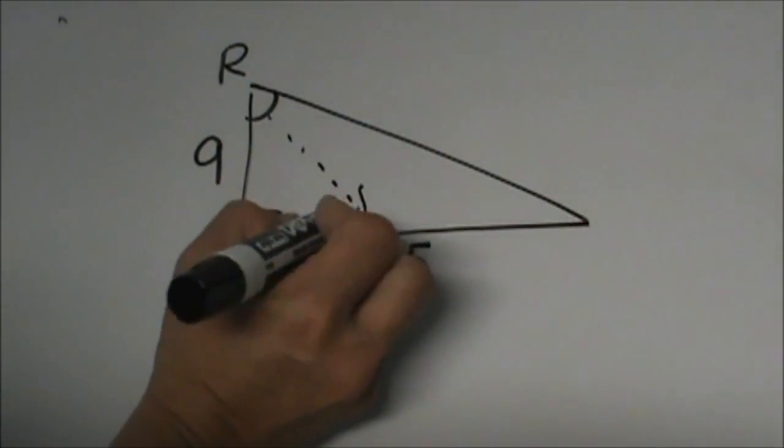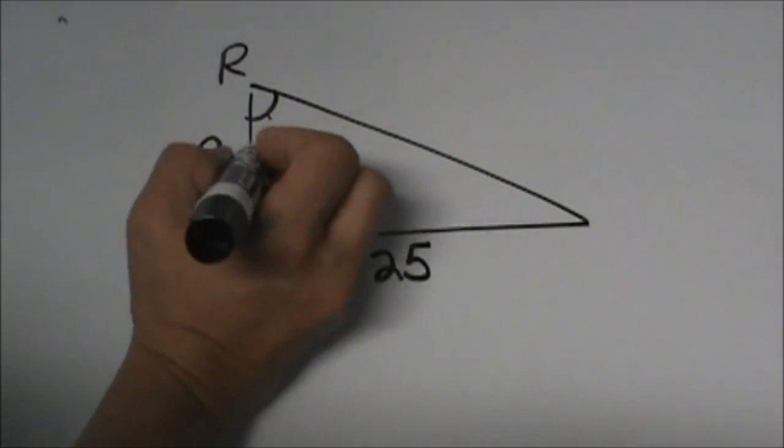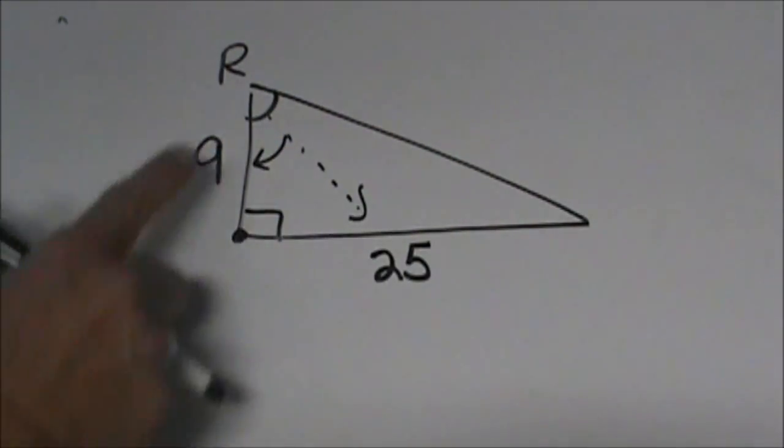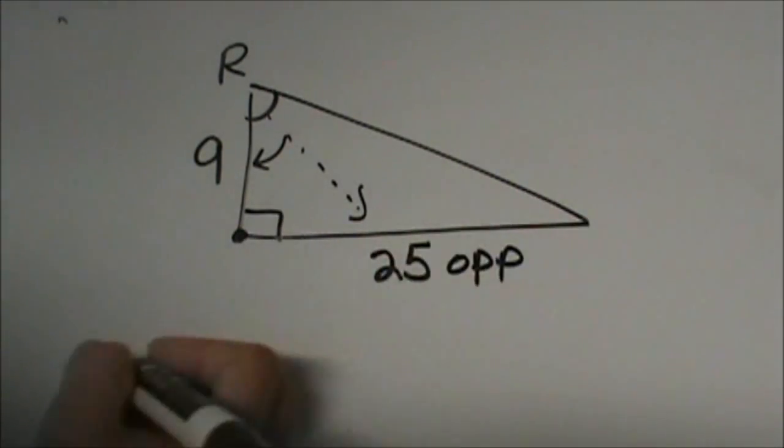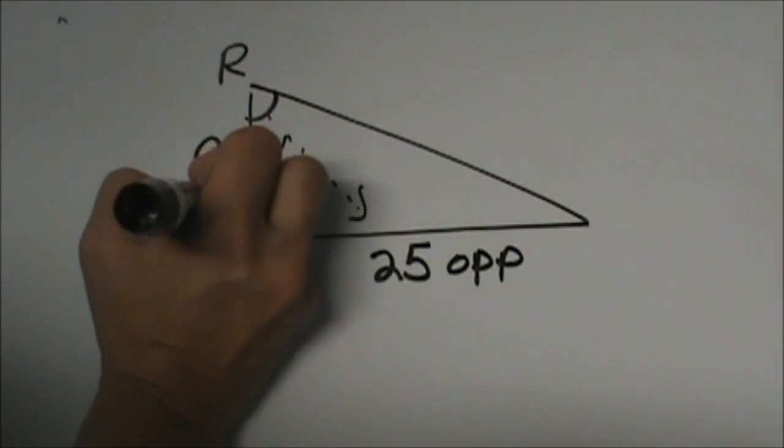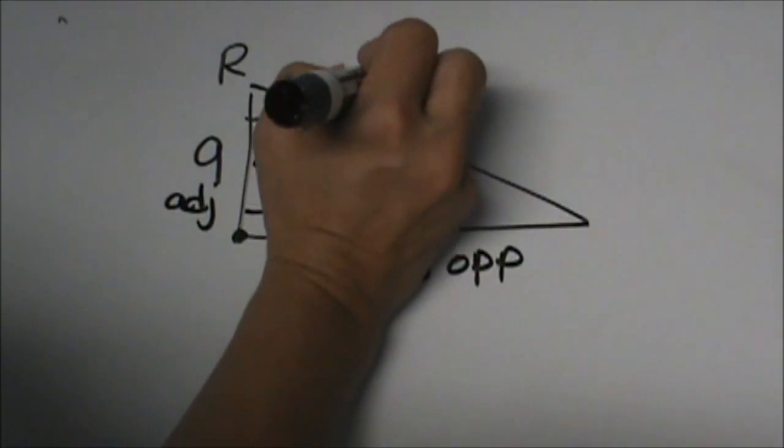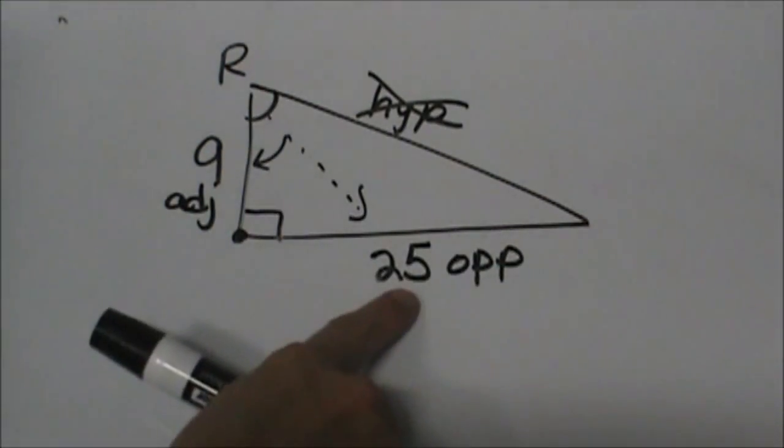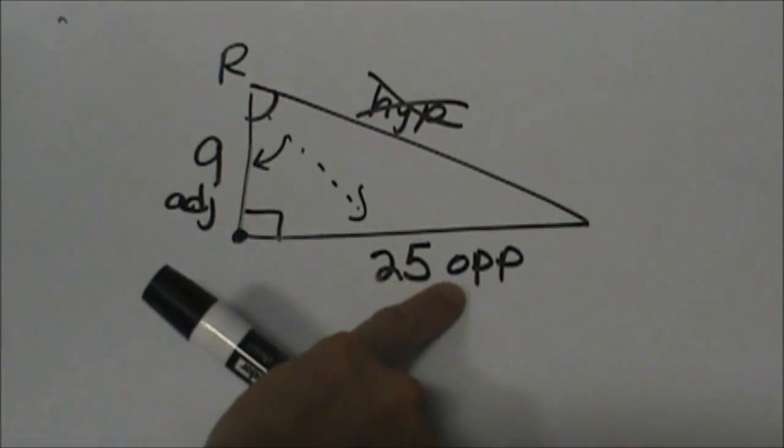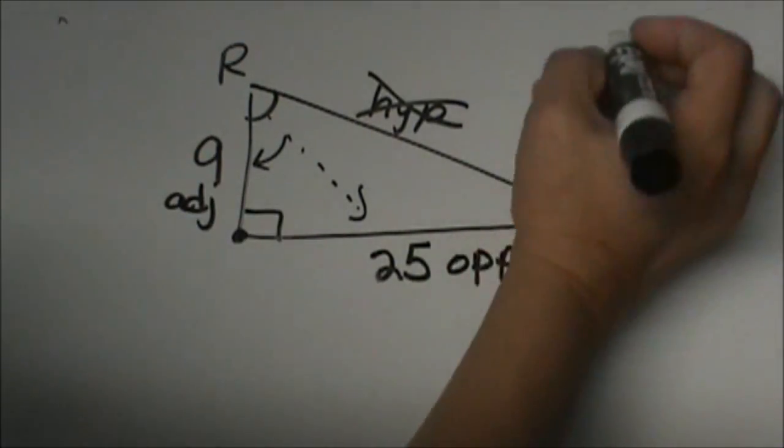Which two sides do we have? This side and this side. From angle R, the 25 is our opposite and the 9 is our adjacent, and we don't have the hypotenuse. So which trig function uses opposite and adjacent? That is tangent.